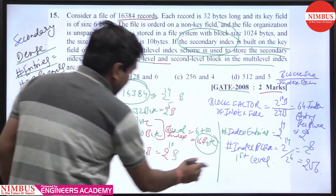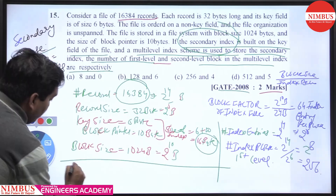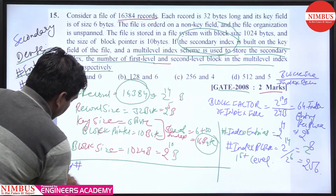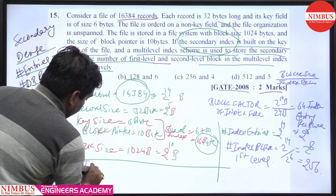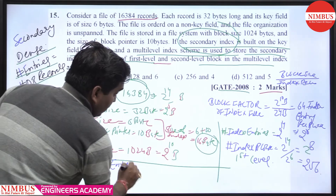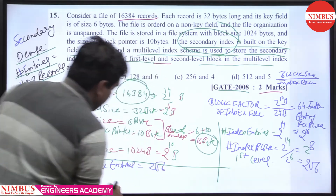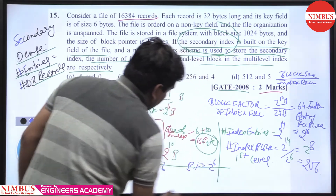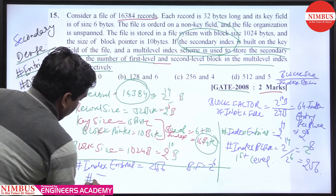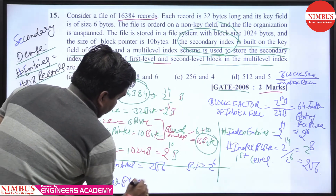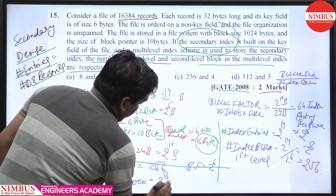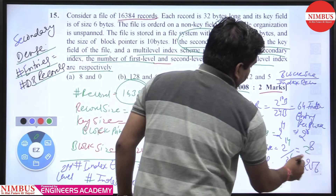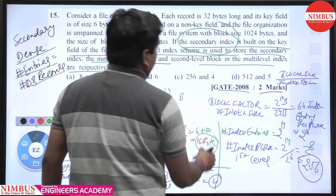For the second level index, the number of index entries equals the number of first level blocks, which is 256. The block factor is 2 raise to power 6 (64). So the number of second level index blocks is 2 raise to power 8 divided by 2 raise to power 6, that is 2 raise to power 2, which equals 4. So the answer is 256 and 4.